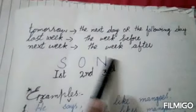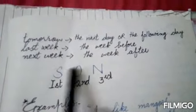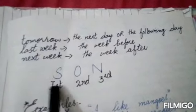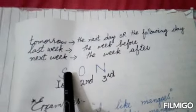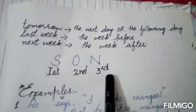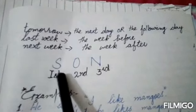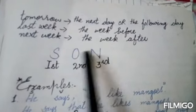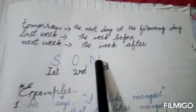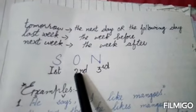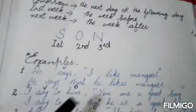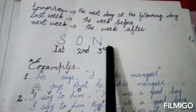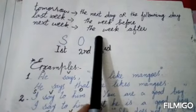آپ نے SUN rule یاد رکھنا ہے — S، U، N — جس کے نیچے first، second اور third لکھنا ہے۔ First person کو reporting speech کے subject سے change کرنا ہے۔ Second person کو reporting speech کے object سے change کرنا ہے۔ Third person — he، she، it، they یا کوئی نام — no change۔